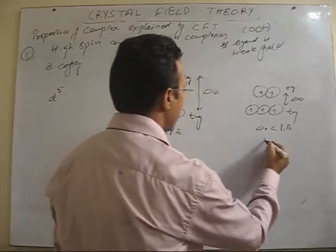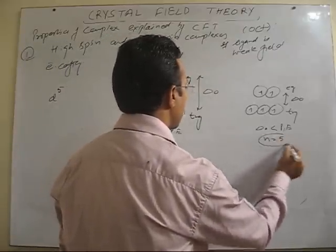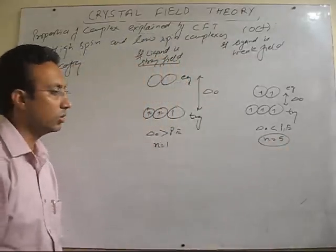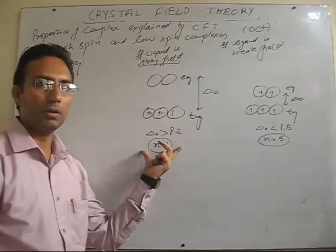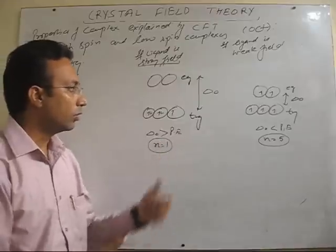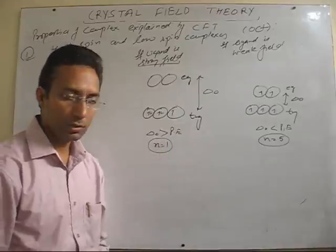So here number of unpaired electrons are 5, that means it is highly paramagnetic in nature. Number of unpaired electrons is only 1, that means it is weakly paramagnetic case. So you can see how the electronic arrangement is done.